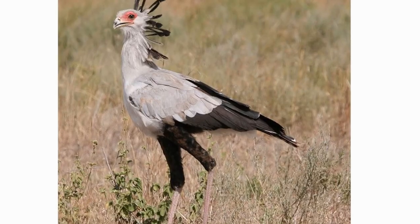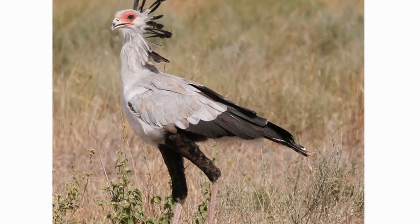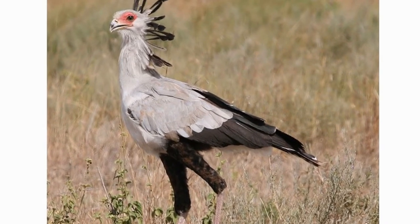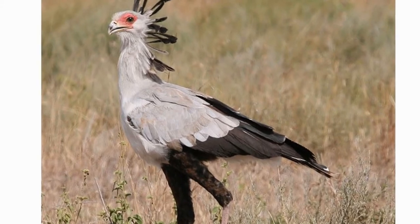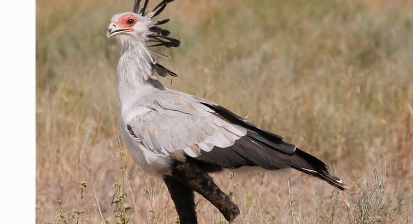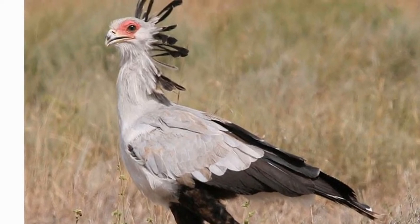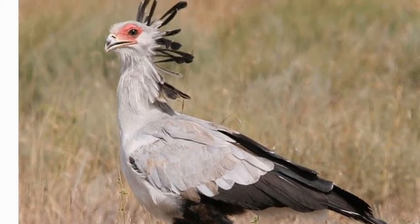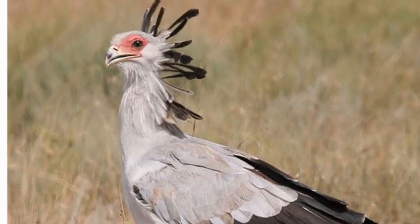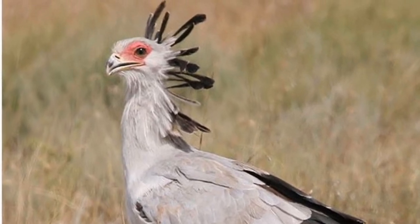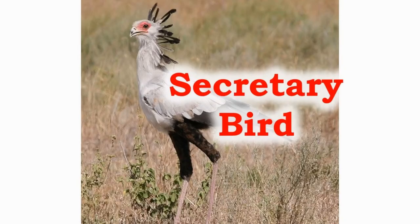The secretary bird, unlike other birds, walks on the ground to find their prey. They have a wingspan of seven feet. They are found in sub-Saharan areas.